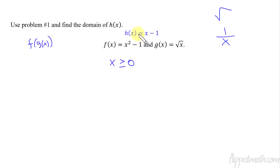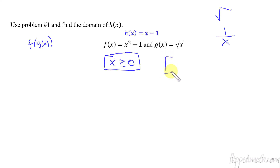Therefore, even though the function is x minus one and you'd think you can plug in anything, you're not allowed to plug in a negative number because that would create problems for g of x, which was used as the input. So there are two layers: the restrictions on g of x, and the restrictions on h of x. The domain of h of x is x greater than or equal to zero, or in interval notation: bracket zero, comma, infinity, parenthesis.